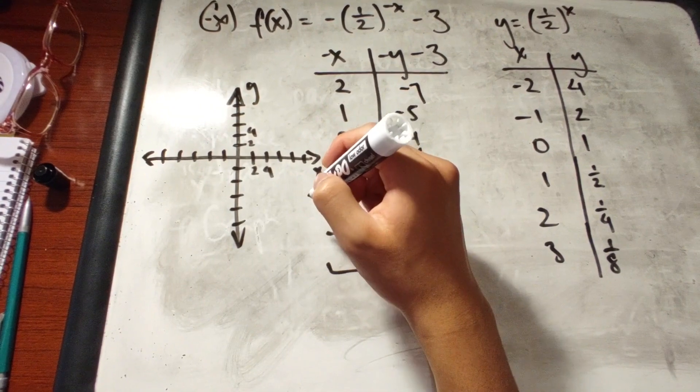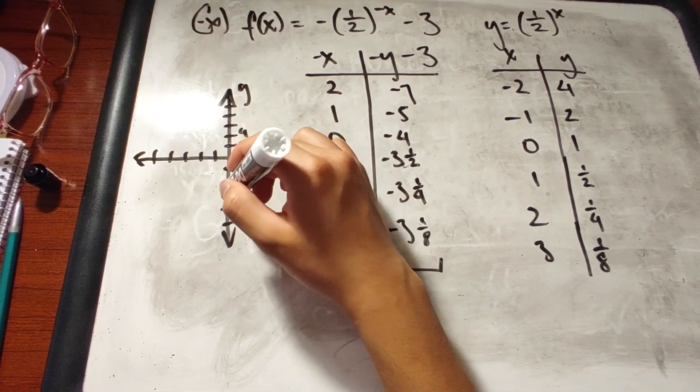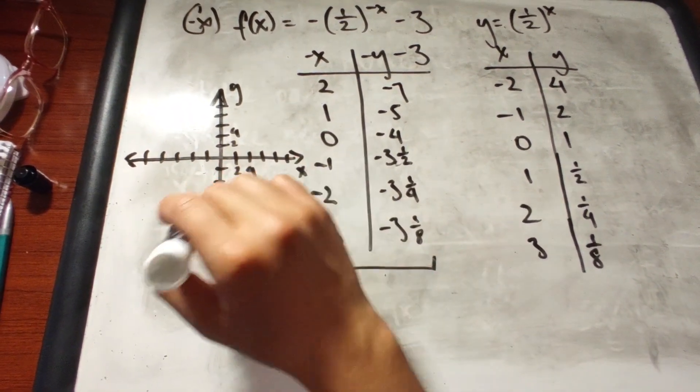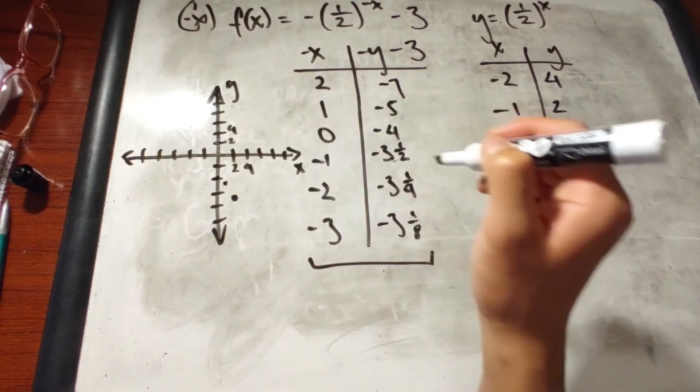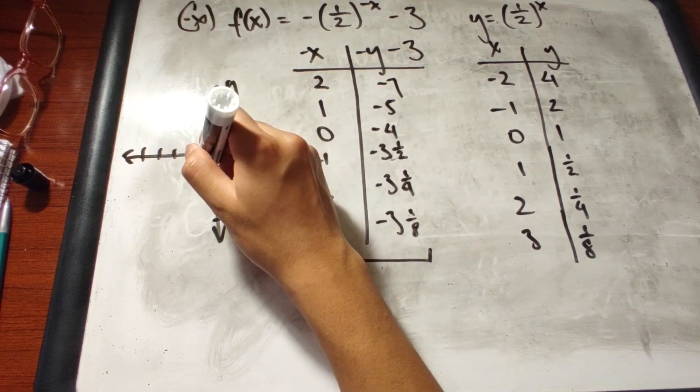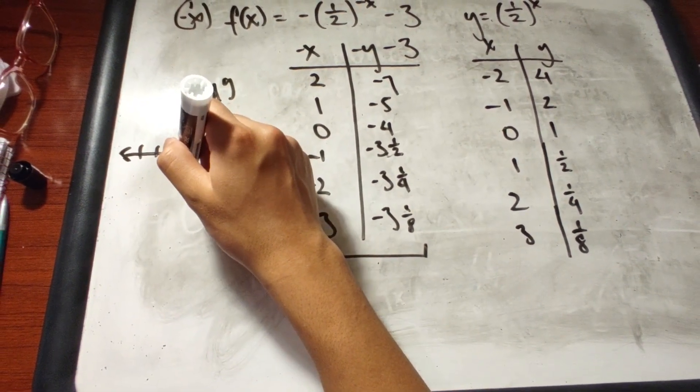So, it'll be 2, negative 7. 1, negative 5. 0, negative 4. Negative 1, 3 and 3 quarters. Negative 2, 3.